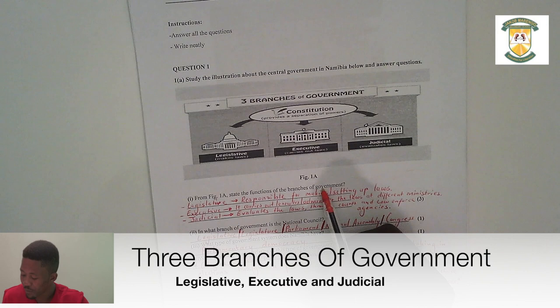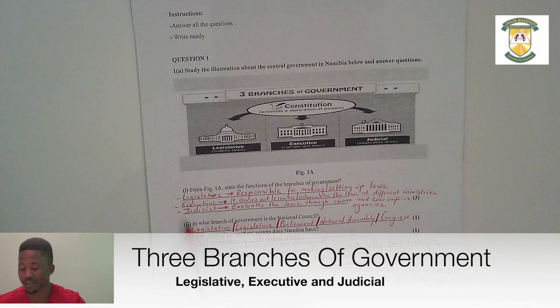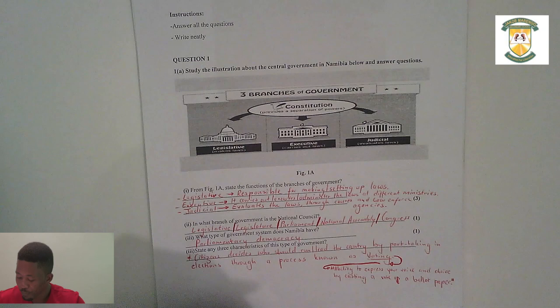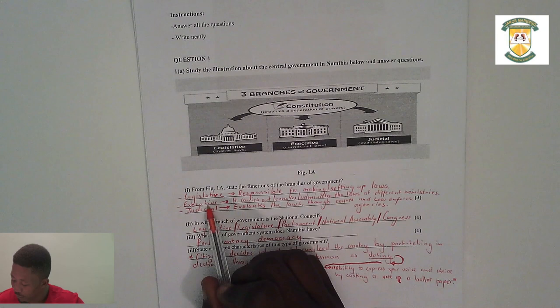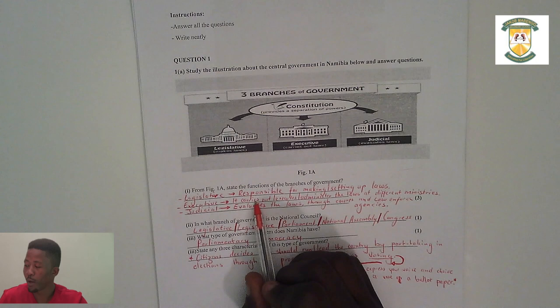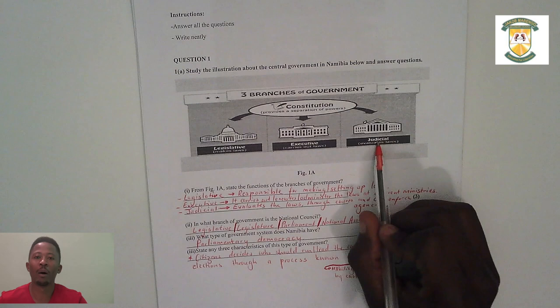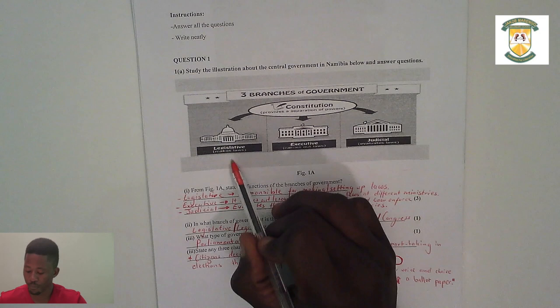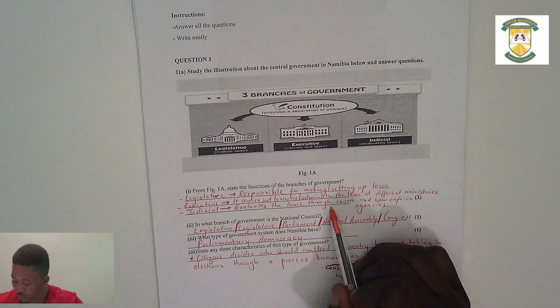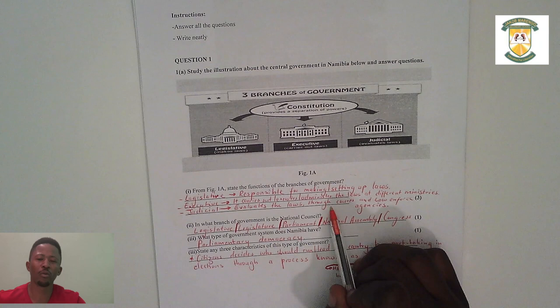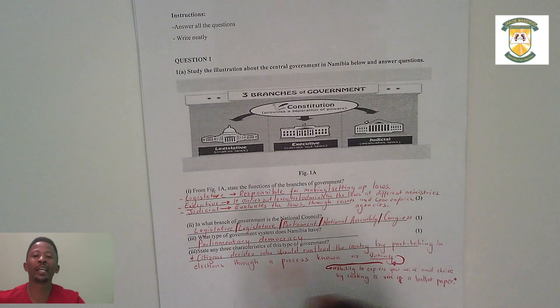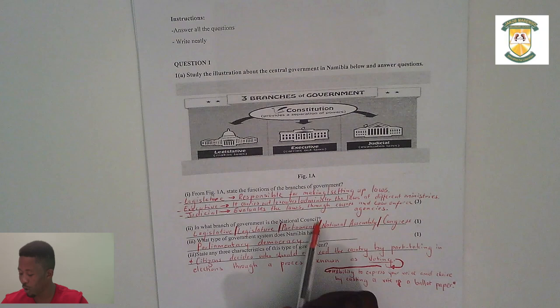The first question asks you to state the function of the branches of government. Number one: we have our legislature, which is responsible for making the laws. Number two: we have our executive, which carries out or administers the laws within our country. Last but not least, we have our judicial branch, which is responsible for evaluating the laws set up through the legislature, through transparent and democratic processes via our constitutional courts.